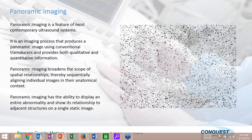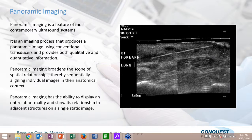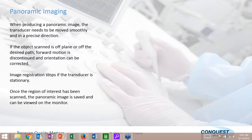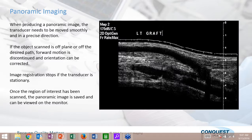Panoramic imaging allows us to essentially do a sweep through the body. For example, when doing vein mapping, I can take the transducer, place it by my bicep, enable panoramic imaging, and slide the transducer down my arm — the ultrasound system pieces the image together to create a continuous panoramic image.